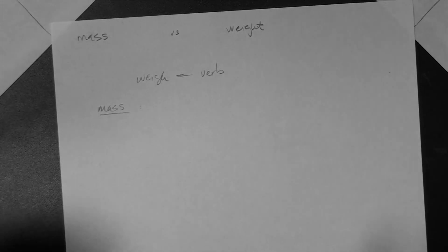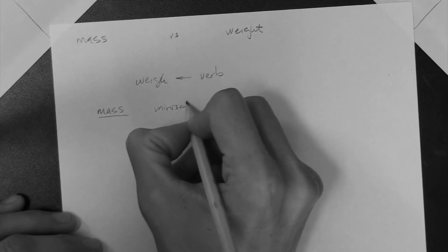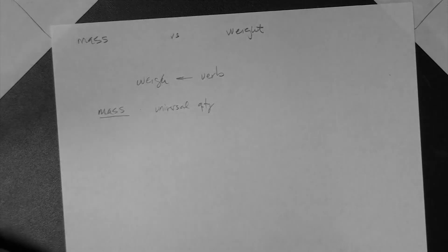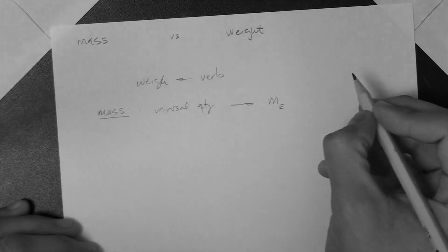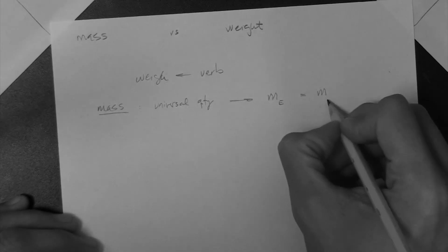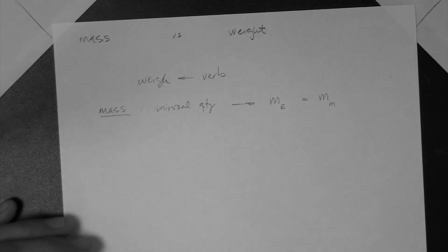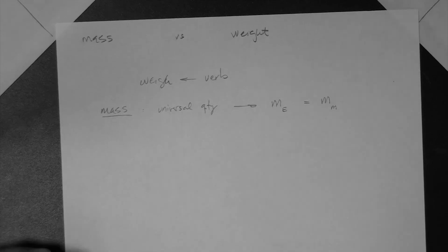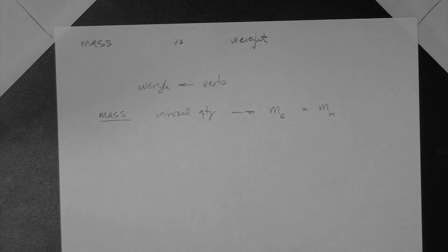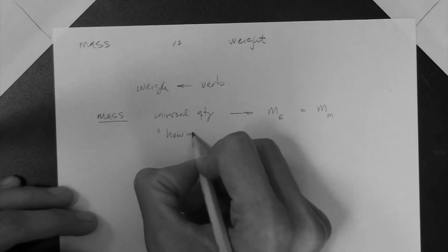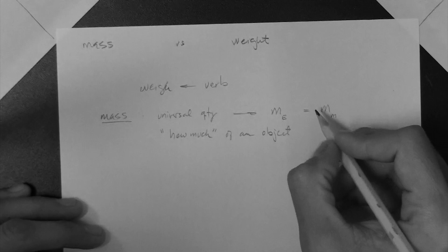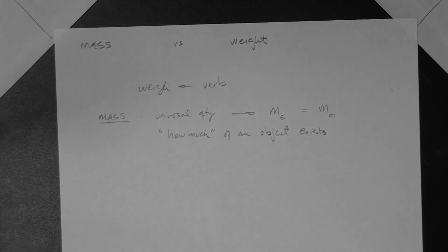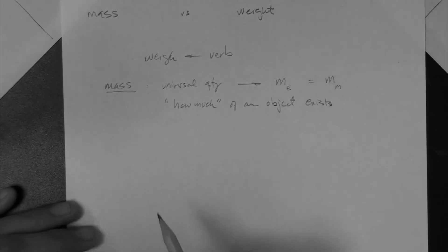So let's define them. What is mass? Mass is basically a universal quantity, which means that the mass of an object on the Earth is the same as the mass of the same object on the Moon or on Mars. Mass is a quantity that doesn't change with respect to where the object is. We could say it is how much of an object exists — it's an amount.